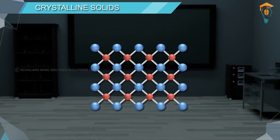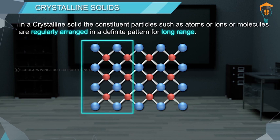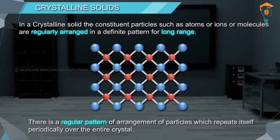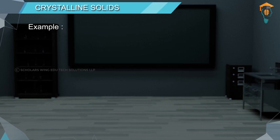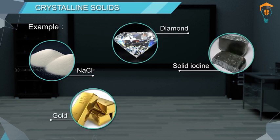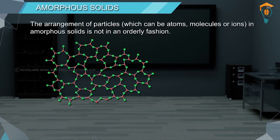In a crystalline solid, the constituent particles such as atoms, ions, or molecules are regularly arranged in a definite pattern for a long range. The arrangement is so regular that by knowing the arrangement at any one site, we can predict the arrangement at other sites. This regular pattern repeats itself periodically over the entire crystal. Examples include sodium chloride, diamond, solid iodine, gold, and quartz.